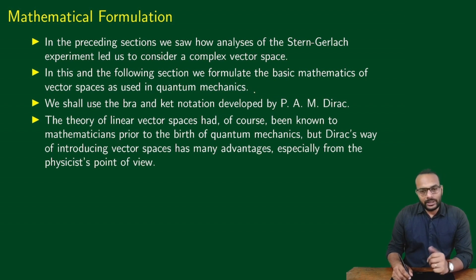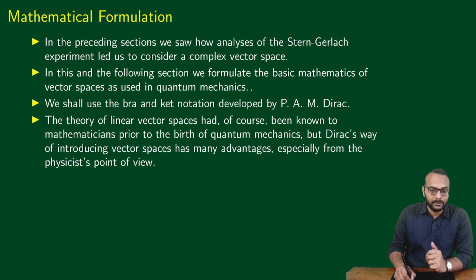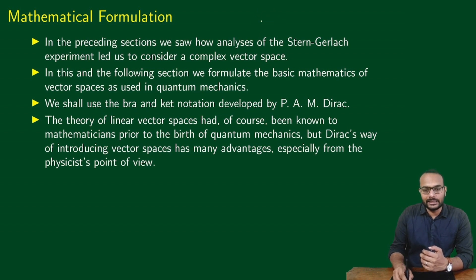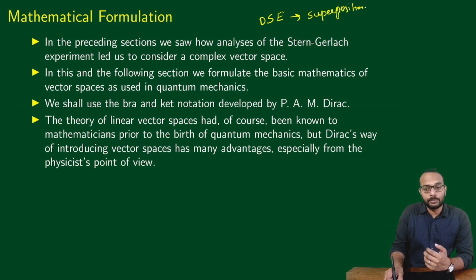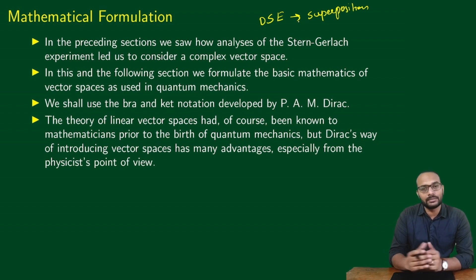In this class and the following classes, we will be formulating the basic mathematics of vector spaces as used in quantum mechanics. From the previous classes, we got some motivation to choose vector spaces as the correct mathematical framework. From the double-slit experiment, we saw that there was something called the principle of superposition — we had to posit this to explain the interference pattern seen on the screen, even when you send one electron at a time. So we saw that vectors naturally incorporate the principle of superposition.